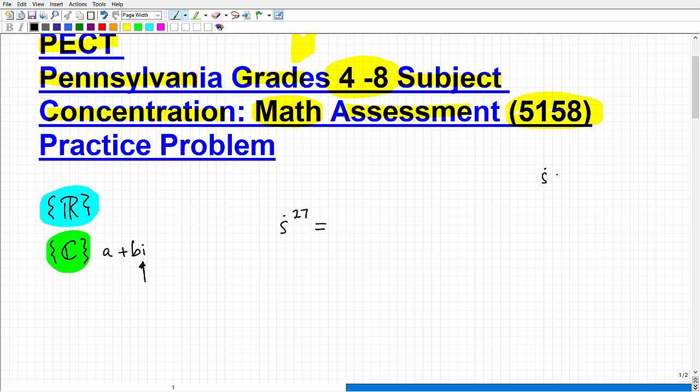First, we want to just understand what is i equal to. Pop quiz: the value of i is the square root of negative one. Hopefully you guys remember that. Yeah, this is kind of coming back.